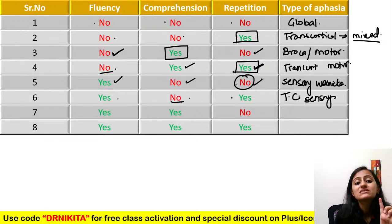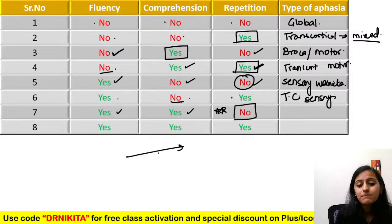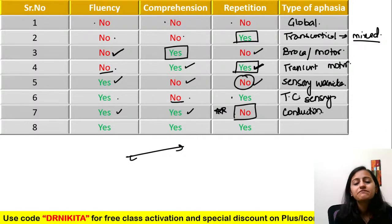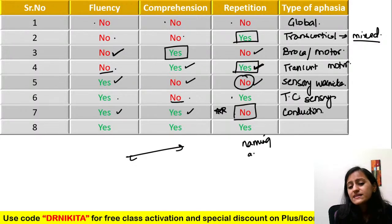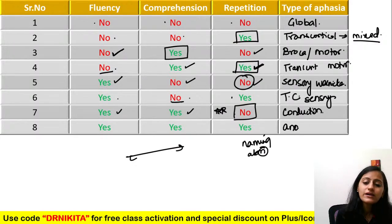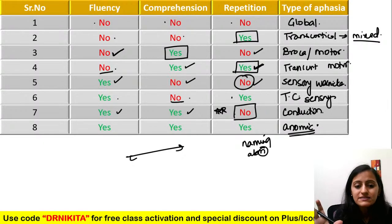When repetition is absent but the other two are normal — only repetition is affected — that is conduction aphasia. When fluency, comprehension, and repetition are all normal, and only naming is abnormal, that is anomic aphasia.